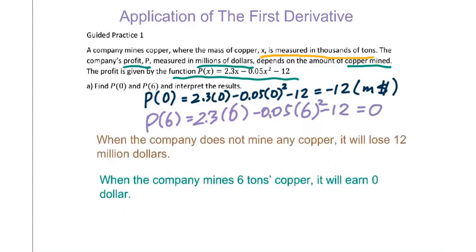The meaning for P(0): when the company doesn't mine any copper, it will lose 12 million dollars. When the company mines 6 tons copper, for P(6), it will earn 0.